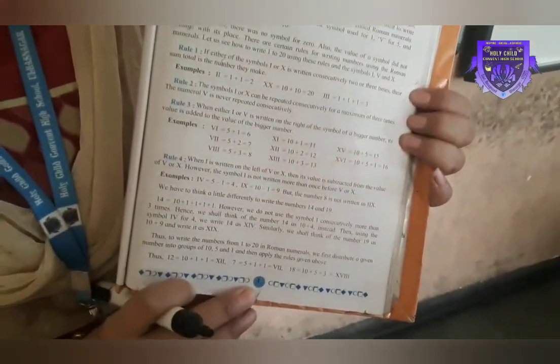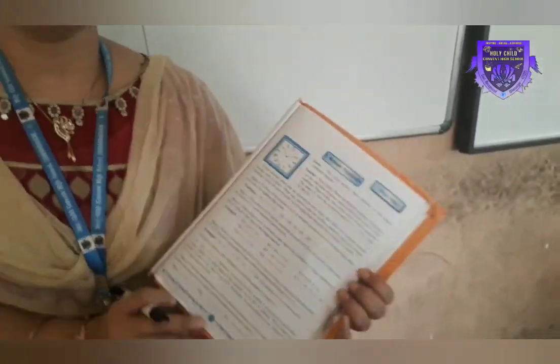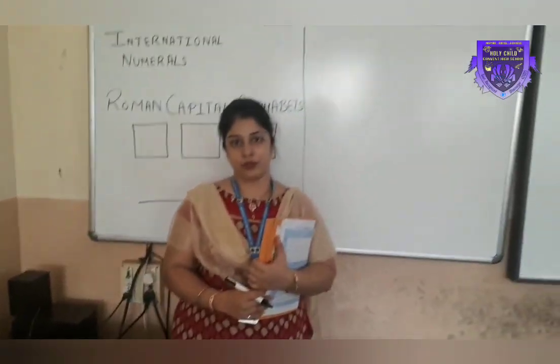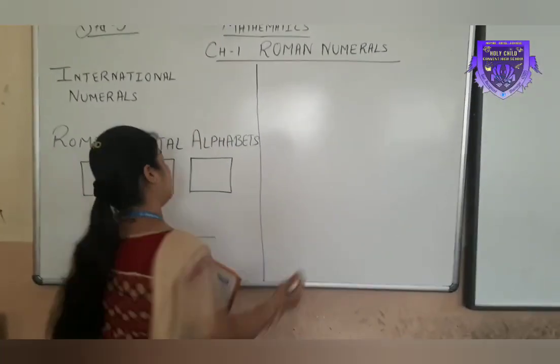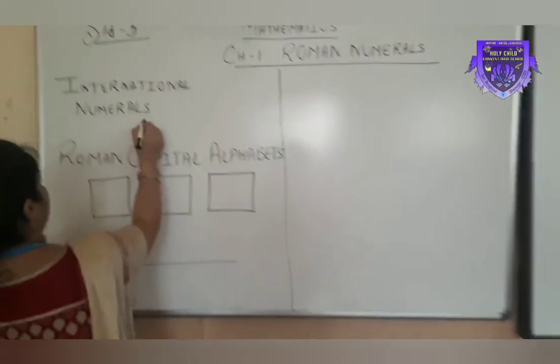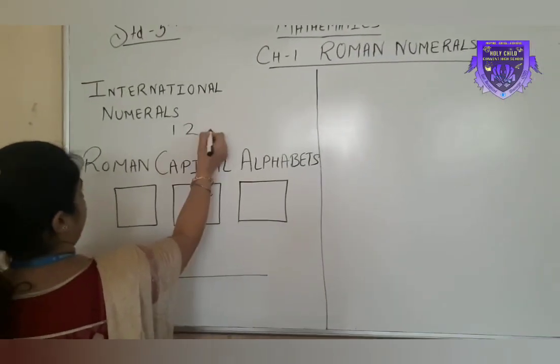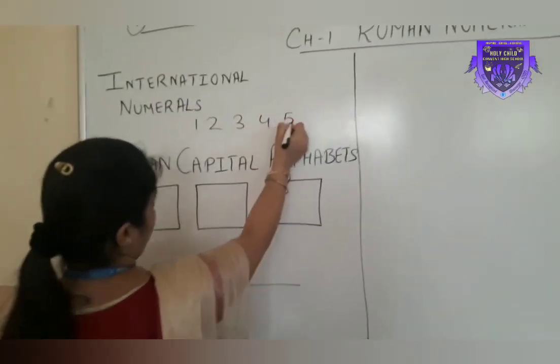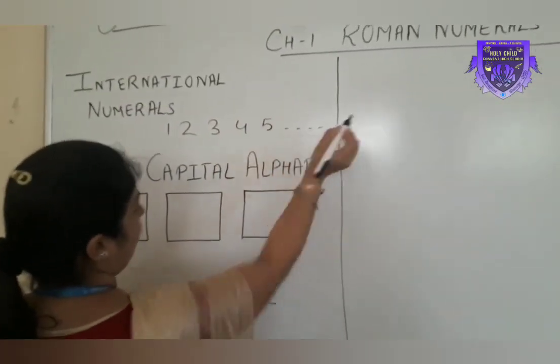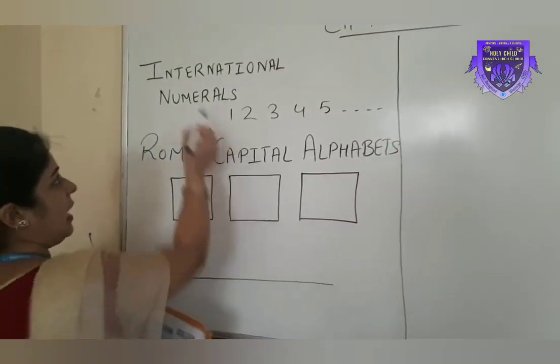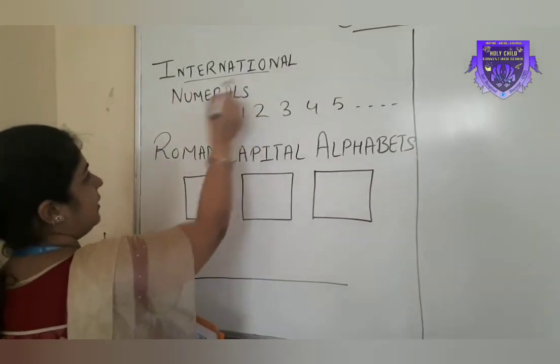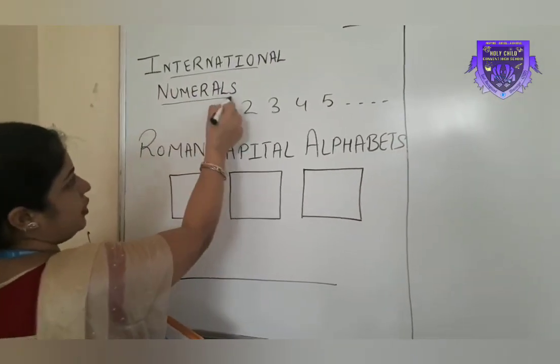That is on page number 1. Usually we use numbers 1, 2, 3, 4, 5, and so on. These numbers are called international numerals.